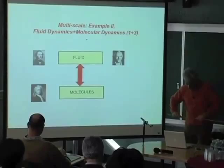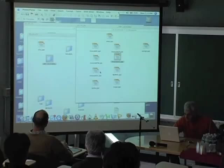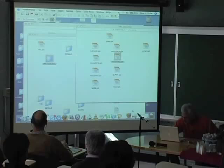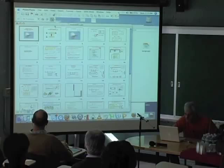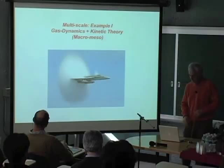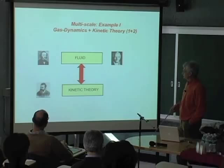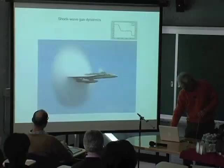This is Example Two — I'm sorry. Example one is gas dynamics and kinetic theory. So we are coupling today the first two levels of the hierarchy: fluid dynamics — in fact I should have put Euler picture because it's idealized dynamics — and Boltzmann kinetic theory. So this will be a two-level multiscale application.